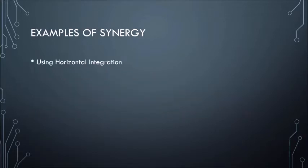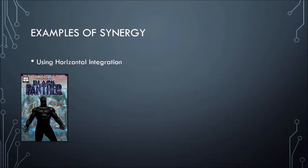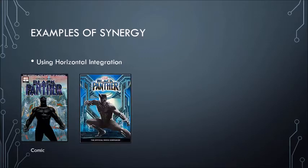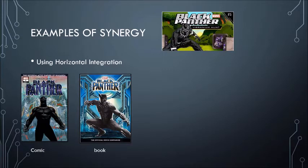Here are some examples using horizontal integration, which is where you own different companies within a conglomerate that operate along the same level and create media products. With something like Black Panther, you've got the film, but Disney also own Marvel who published comics — you can have the Black Panther comic. They also own book publishers so you can have the official movie book, and they also own websites such as marvel.com which has interactive games and video games such as Black Panther Vibranium Hunt.